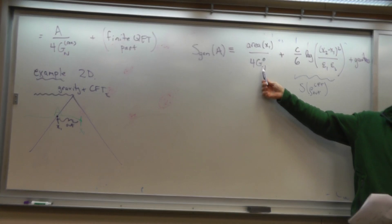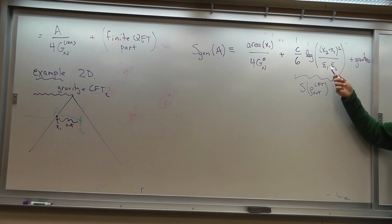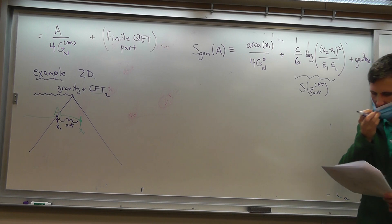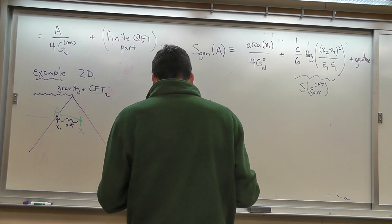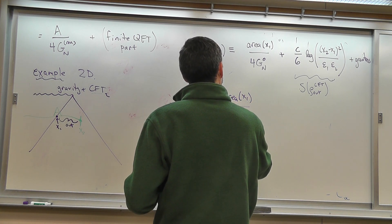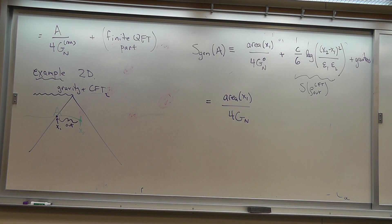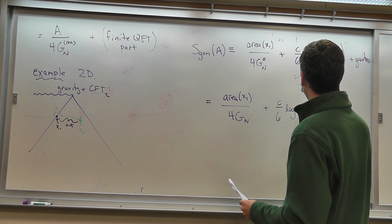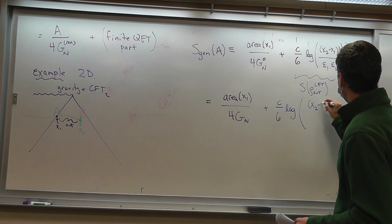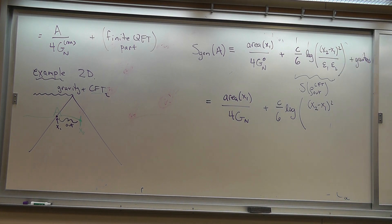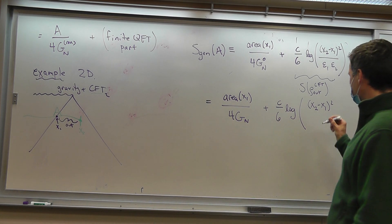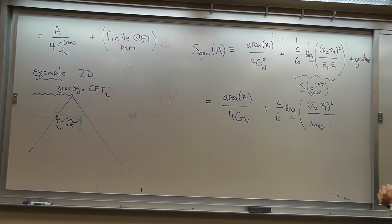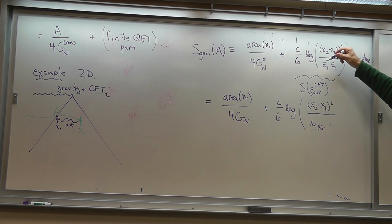The bare Newton's constant is UV divergent, and we have UV divergences from the CFT entropy. So what happens is that when you renormalize, you get area of x1 over 4G_Newton — that's now the renormalized Newton's constant. We just write Newton's constant; we always mean the renormalized one. Plus C over 6 log... the renormalization scale has to enter in place of the UV cutoff. The renormalization scale is going to enter in place of the UV cutoff at the horizon.